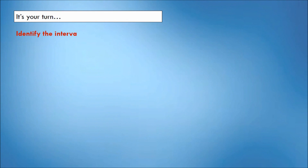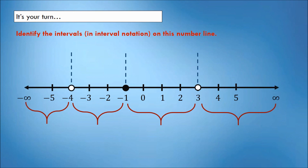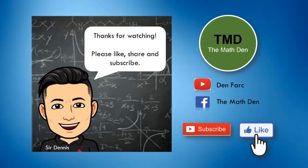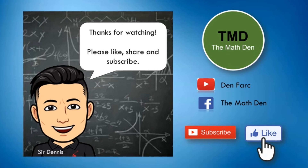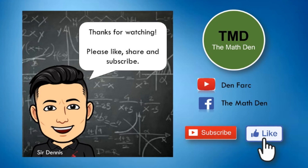It's your turn. Identify the intervals on this number line. Hollow circles are on negative 4 and positive 3, while a shaded circle is on negative 1. There are 4 intervals. Pause the video and write your answer in the comment section. Thanks for watching. See you in the next video — don't forget to subscribe and hit that notification bell for more video tutorials.